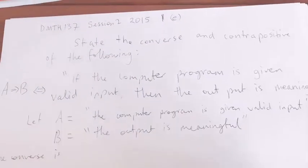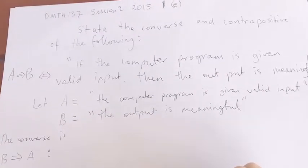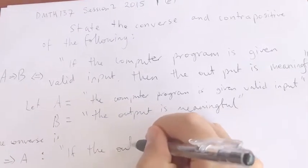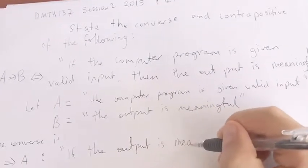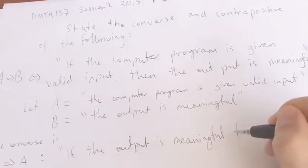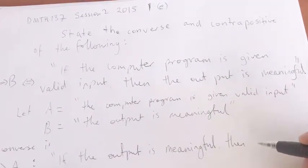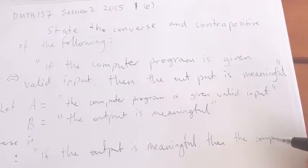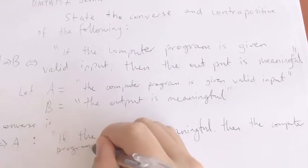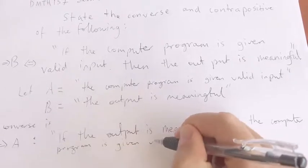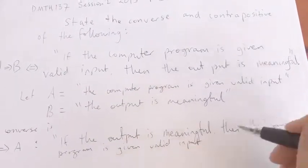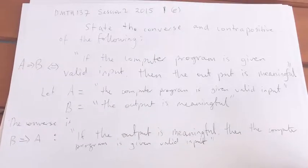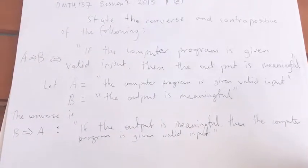Okay. So B implies A now says B implies A. Okay, so that's the converse. The converse is not the same as the original statement, but it's something you can get from the original statement.